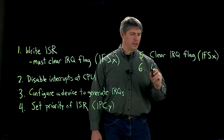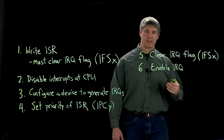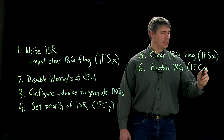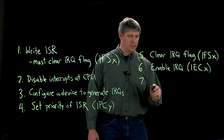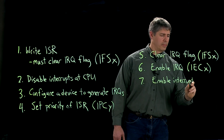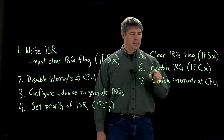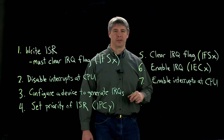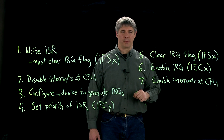Next, you're going to enable the IRQ so that the CPU will start paying attention to this particular IRQ. You'll do that by manipulating the interrupt enable control bits of the appropriate interrupt enable control register. And finally, the last thing you're going to do is enable interrupts at the CPU again. This reverses step two, and now the CPU can start processing interrupts. Once you do all seven of these steps, your program can start using interrupt service routines, and we'll see an example of that in code next.